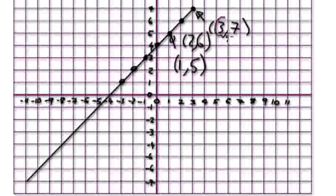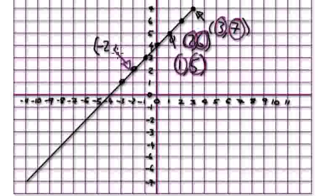So look — this here is your x, and this here is your y. If you look at just this point here, it would be minus 2 across, and then up 2. So the coordinates for this point here would be minus 2, 2. This here is your x value, and this here is your y.